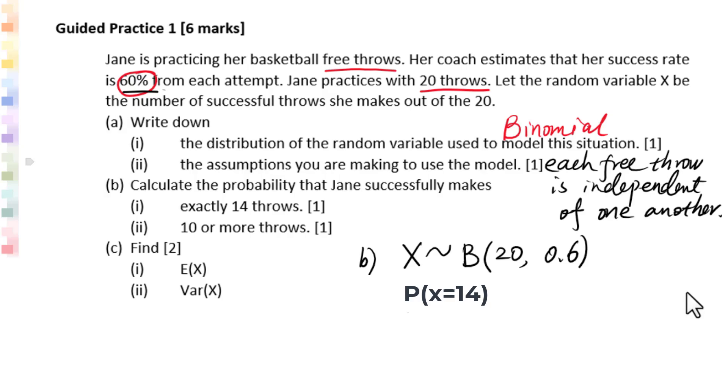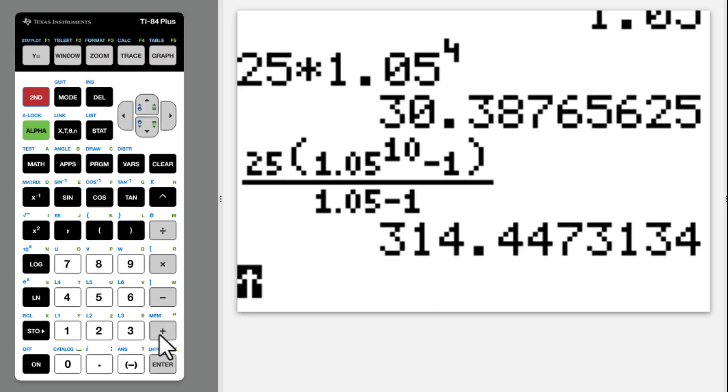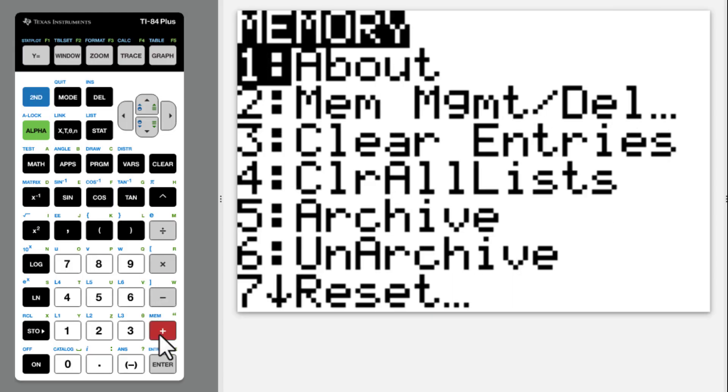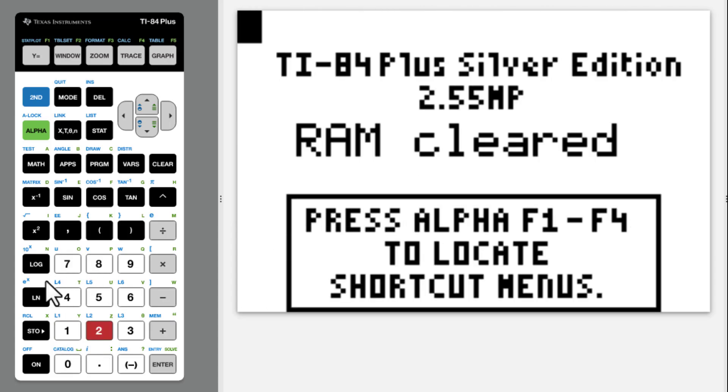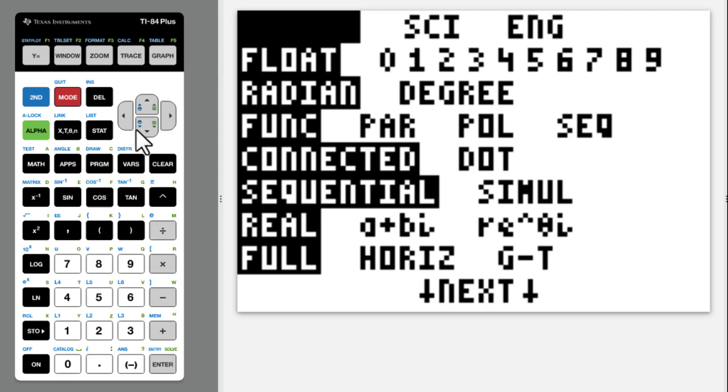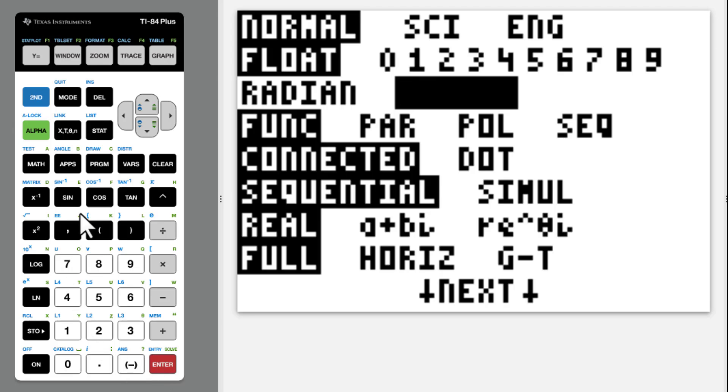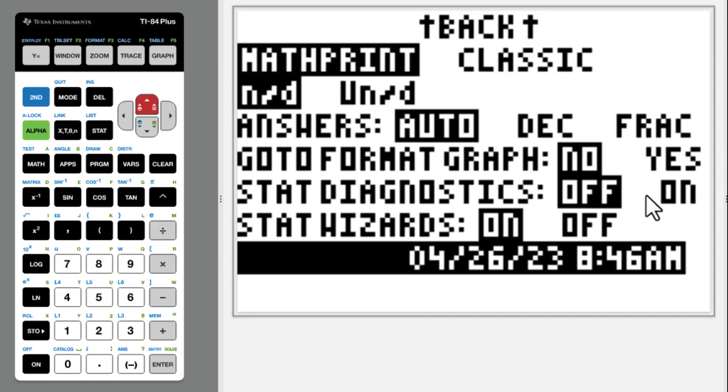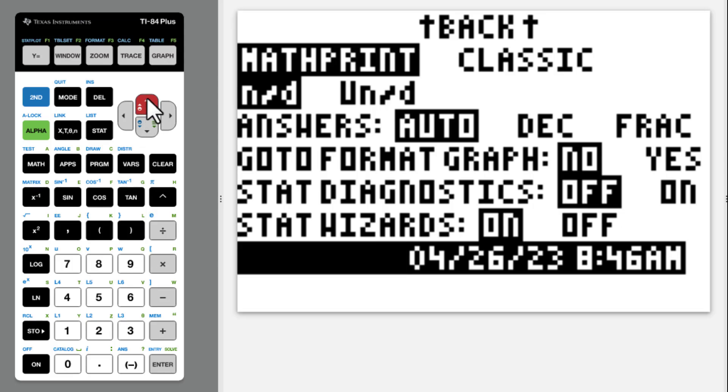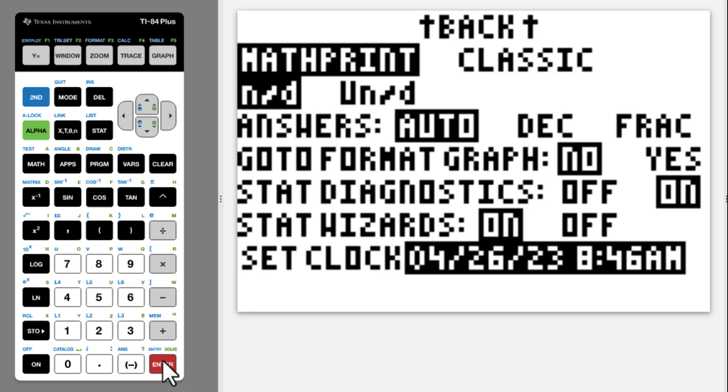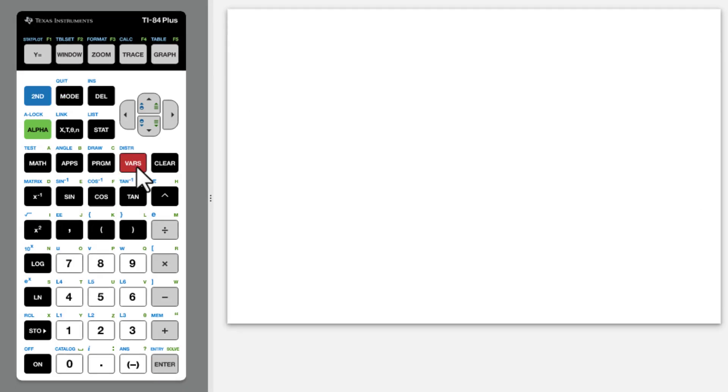We will go to binomial PDF. When you take an IB exam for AISL, make sure to clear the memory first. Then go to mode, degree, then go up to stat diagnostic on, so that you can get correlation coefficient for regression line. Second, variables.